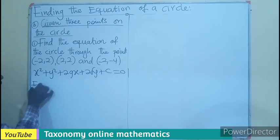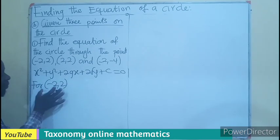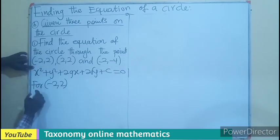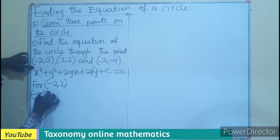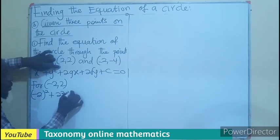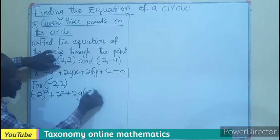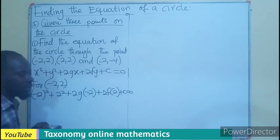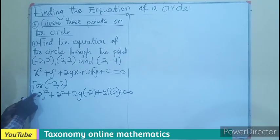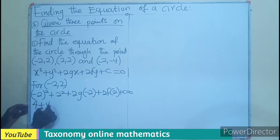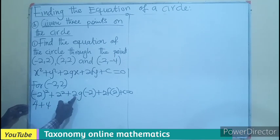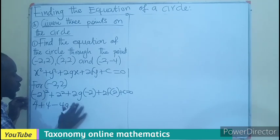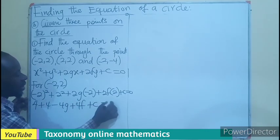For the point (-2, 2), by substitution — whenever I see x I put negative 2, whenever I see y I put 2 — so that is going to be (-2)² plus 2² plus 2g(-2) plus 2f(2) plus c equals zero. Now negative 2 squared is 4, 2 squared is 4, and 2g times negative 2 gives negative 4g, so we have 4 plus 4 minus 4g plus 4f plus c equals zero.